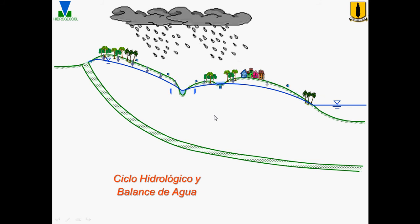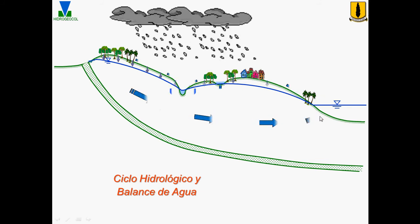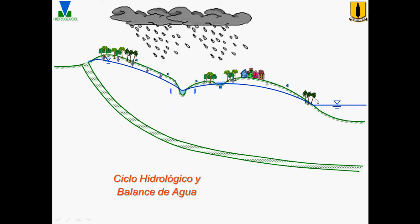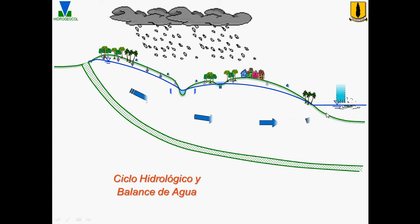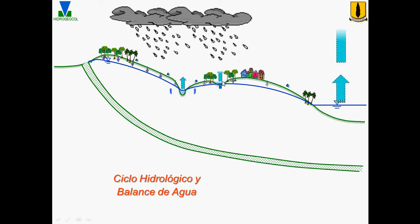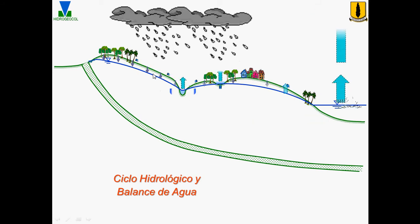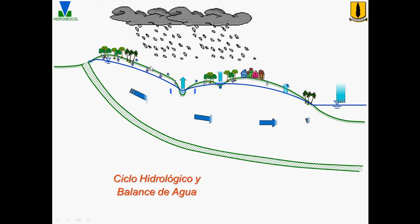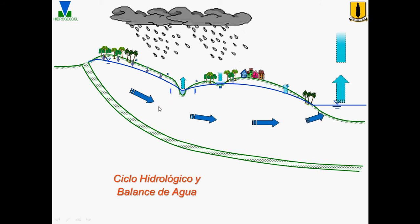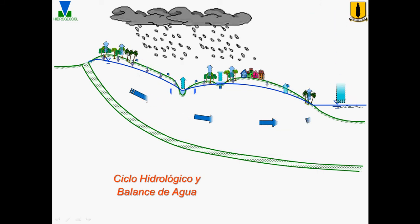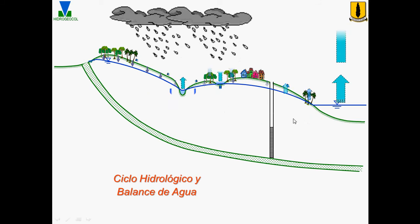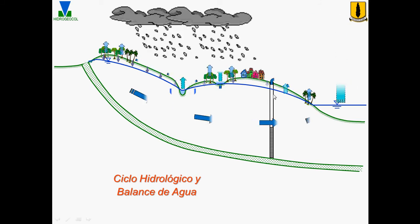There is also interaction with swamps, regional groundwater flow, and output to lakes or seas. Evaporation occurs from the sea, rivers, swamps, and from groundwater especially when the water table is close to the surface. We also have transpiration by vegetation and groundwater used by humans.